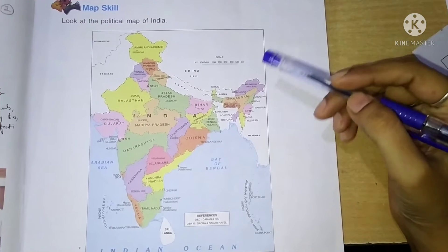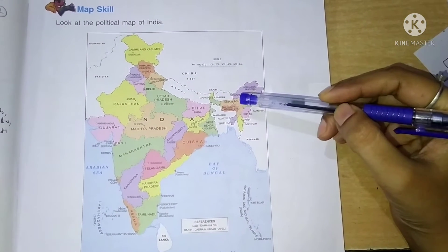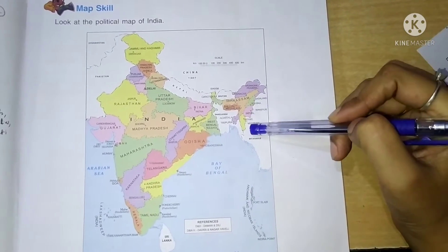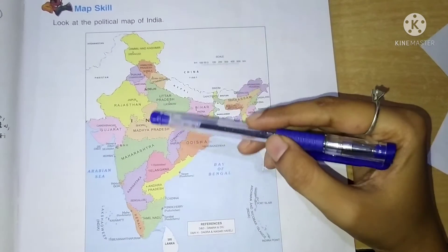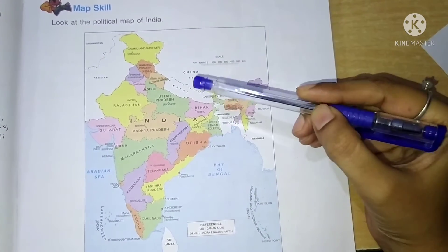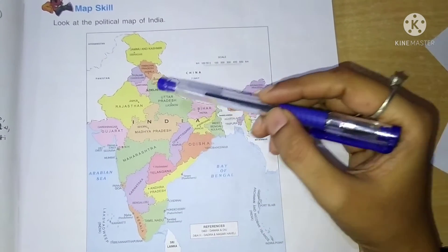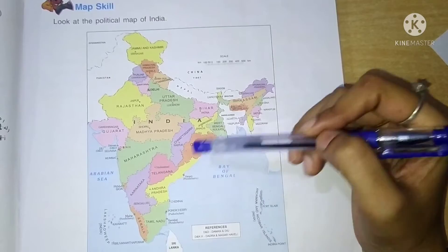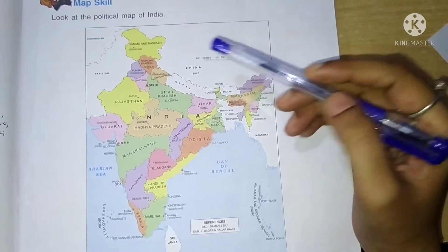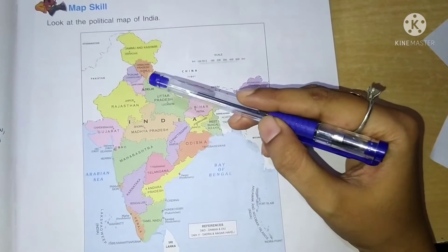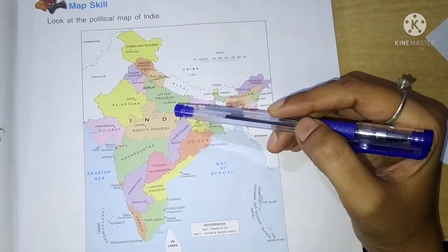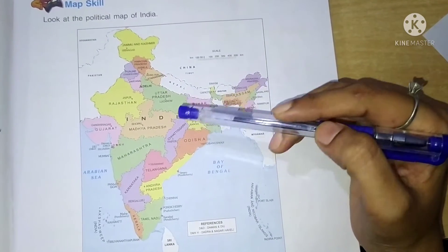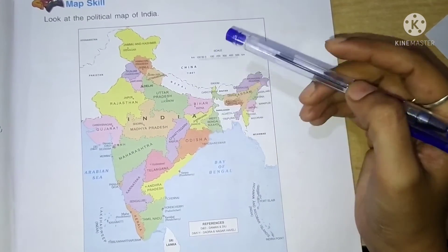This is the political map of India which is given in your SST book. In this, all the 28 states are marked. Once you learn all the states' locations, you can do the map pointing of all the chapters of the map.